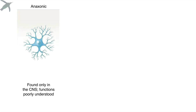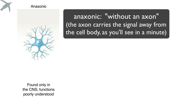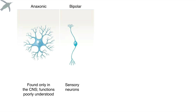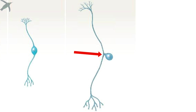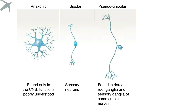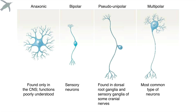First, there are neurons we call anaxonic — without a definable outgoing process. They look strange and are relatively rare. Next, we have bipolar neurons: two distinct processes emanating from the cell body. Then pseudo-unipolar, where one process sticks out and then splits. And by far the most common type are multipolar neurons.